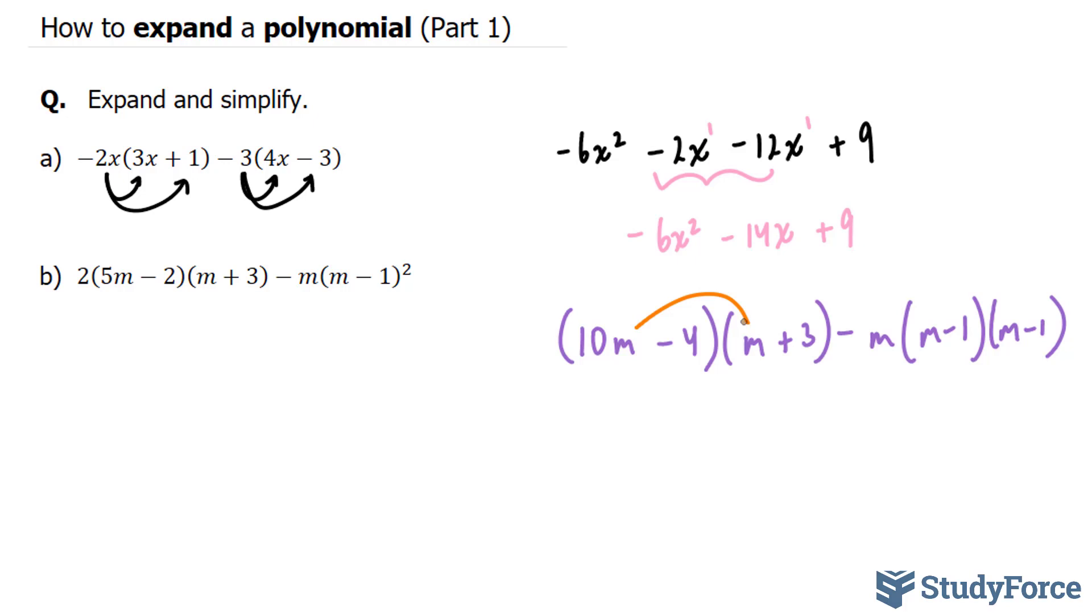10m times m, I'm going to show you with arrows. 10m times m gives us 10m squared. 10m times 3 gives us plus 30m.